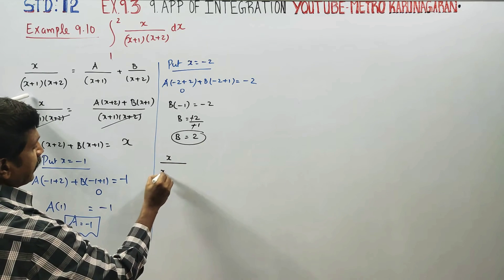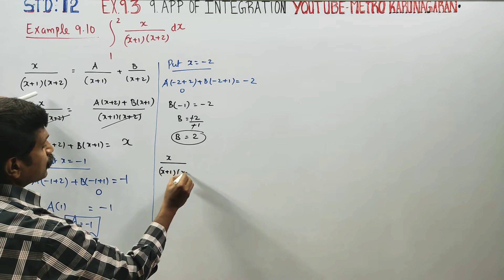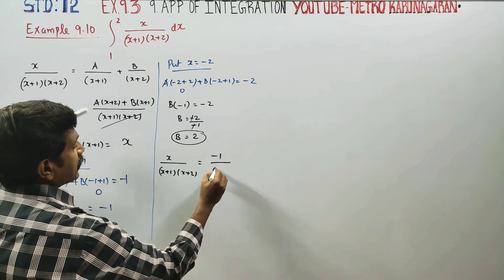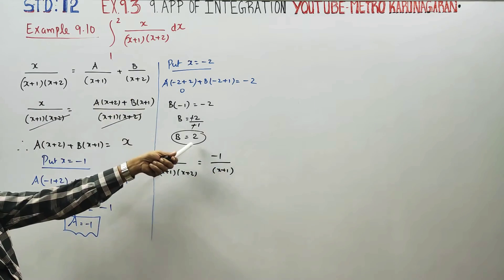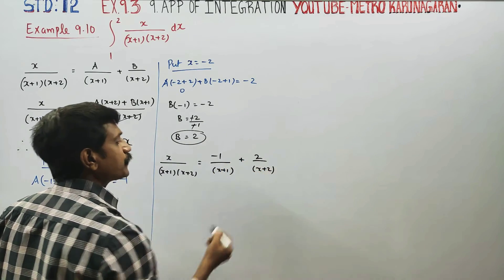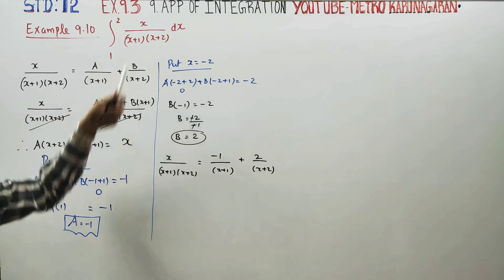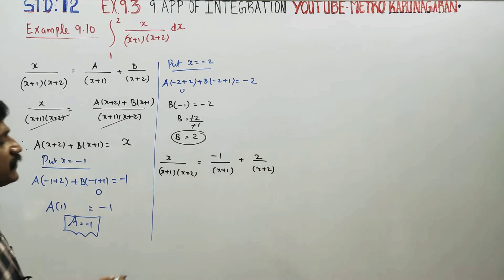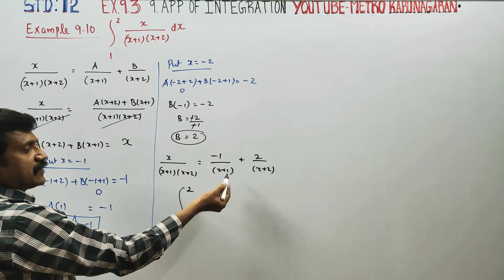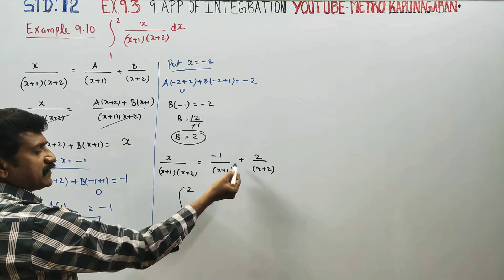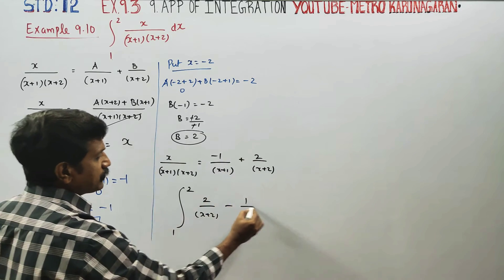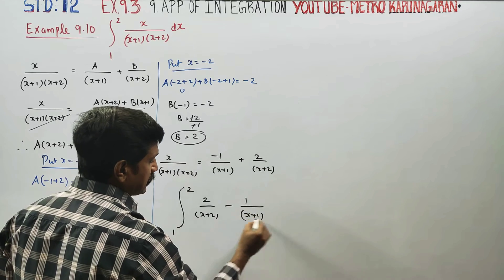So x divided by (x plus 1)(x plus 2) equals minus 1 by (x plus 1) plus 2 by (x plus 2). Substituting these partial fractions, we now enter into integration from 1 to 2: the integral of 2 by (x plus 2) minus 1 by (x plus 1) dx.